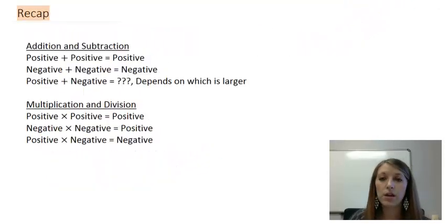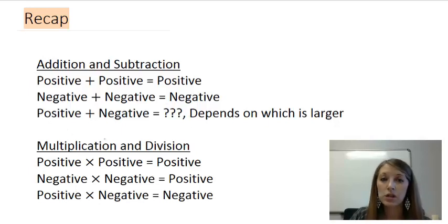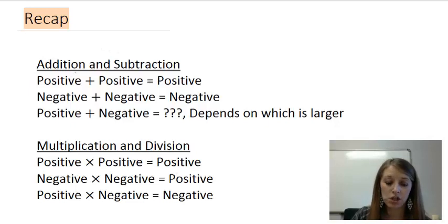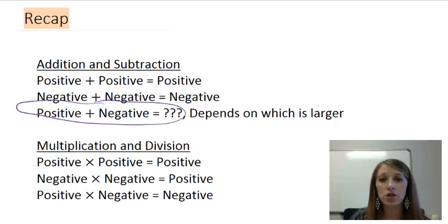To recap all of the rules: with addition and subtraction — positive plus positive gives positive; negative plus negative gives negative; positive plus negative depends on which is larger. For multiplication and division — positive times positive gives positive; negative times negative gives positive; positive times negative gives negative. Subtraction follows the rules of addition, and division follows the rules of multiplication. In 5 out of 6 cases you absolutely know whether the answer is positive or negative. The only time it depends is when you're adding or subtracting two opposite signs.